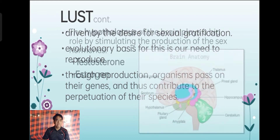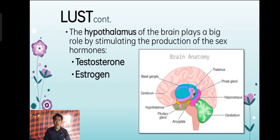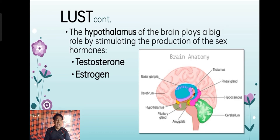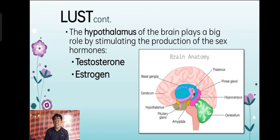Let's look at the brain structure of lust. Lust involves a part of the brain called the hypothalamus, which plays a big role by stimulating the production of sexual hormones — testosterone and estrogen. Testosterone is for males and estrogen is for females. The hypothalamus is located in our brain and serves as a stimulating force that drives sexual hormones when our needs need to be satisfied.